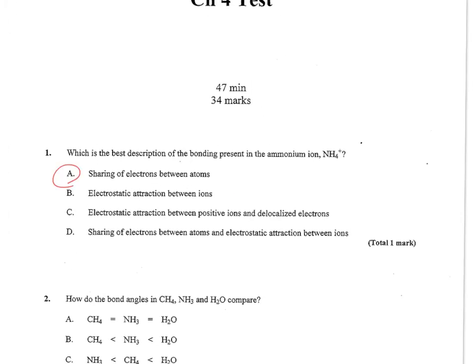B is describing an ionic bond, which this is not. C is describing a metallic bond, which this is not. And then D is describing both the covalent and an ionic bond. But it's just A, just a covalent bond, four single covalent bonds.